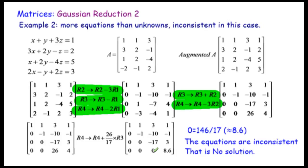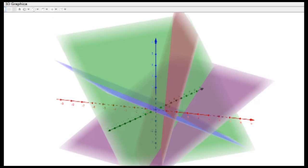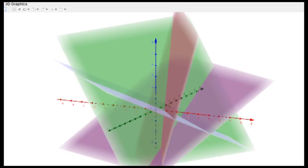We've got a 26 here, which is the only trouble, so we have to do a bit of a manipulation to get a zero there. In this particular case we end up getting 0 equals approximately 8.6 — it was actually 146/17, approximated to about 8.6 — which means there won't be any solutions. This is the inconsistent case.